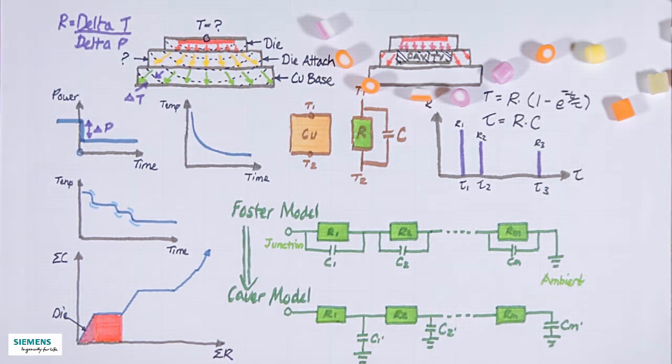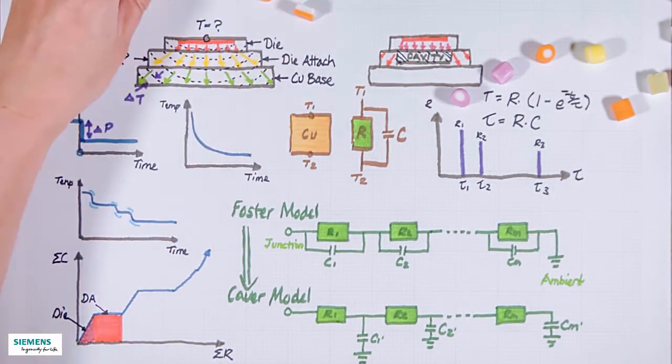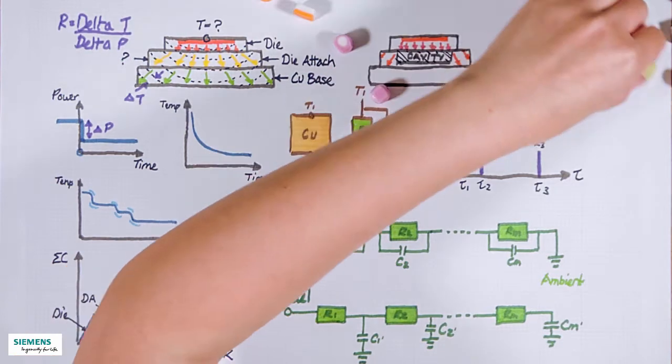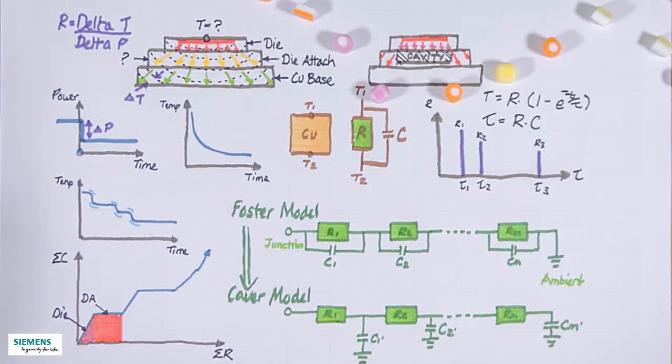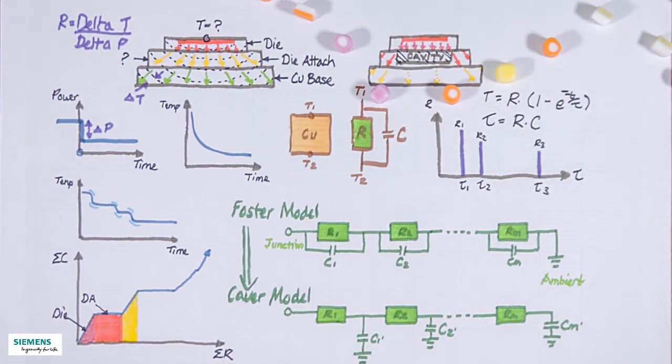we start to add more resistance. R is big, so the line flattens out. The length of this part of the curve will be in direct relationship with the size of the cavity in the die attach. The heat eventually goes into the less resistive copper base, which is shown by this steep part of the curve.